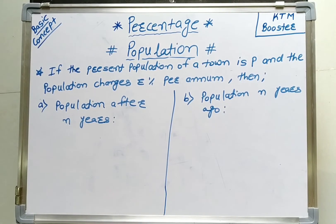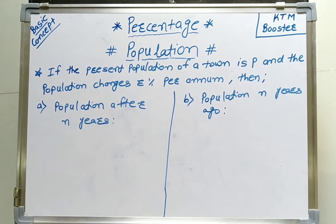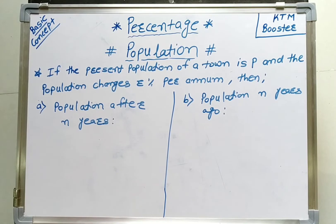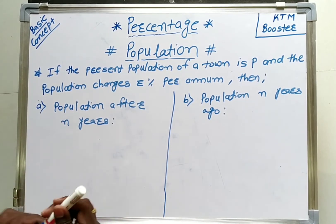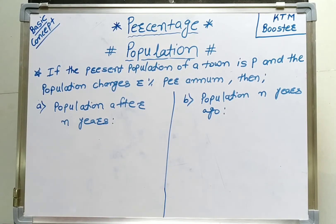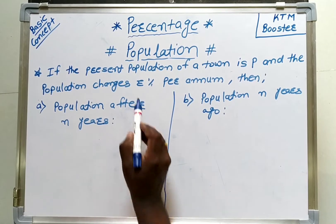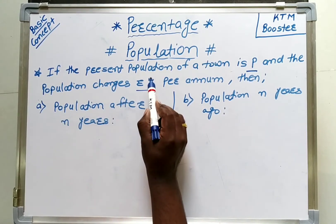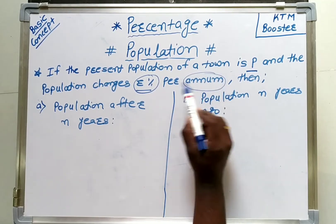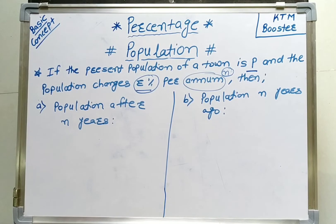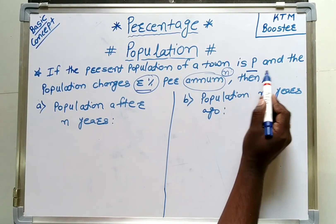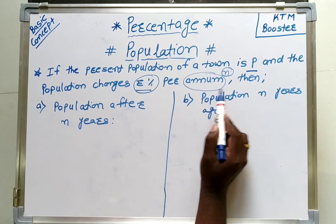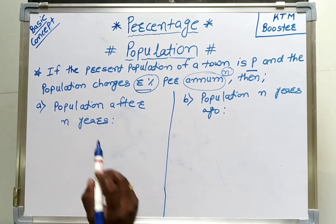Hello friends, welcome to my YouTube channel KTM Booster. Today we are going to discuss a very interesting topic: percentage in percentage. The problems will be asked depending on the population of a town, village, or city that increases or decreases successively per annum at the rate of r percent. If the present population of a town is P and it changes by r percent per annum, we use the term n for the number of years.